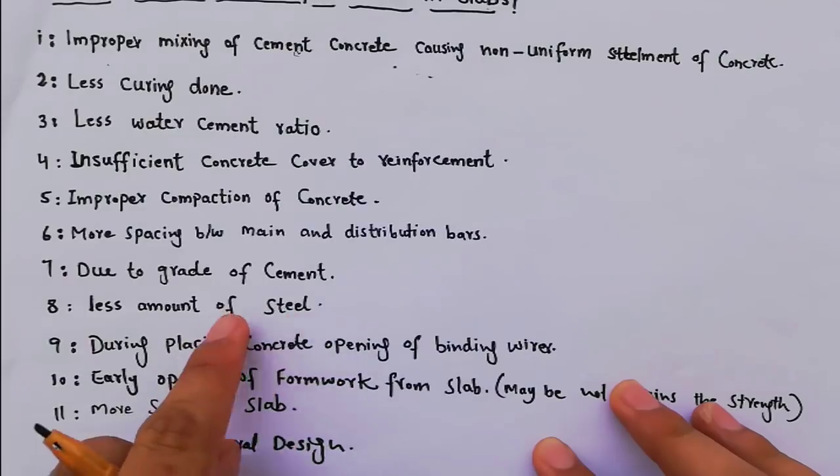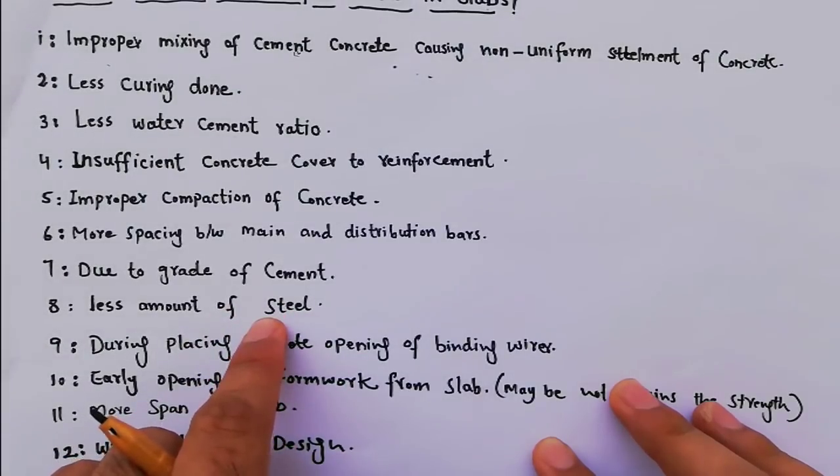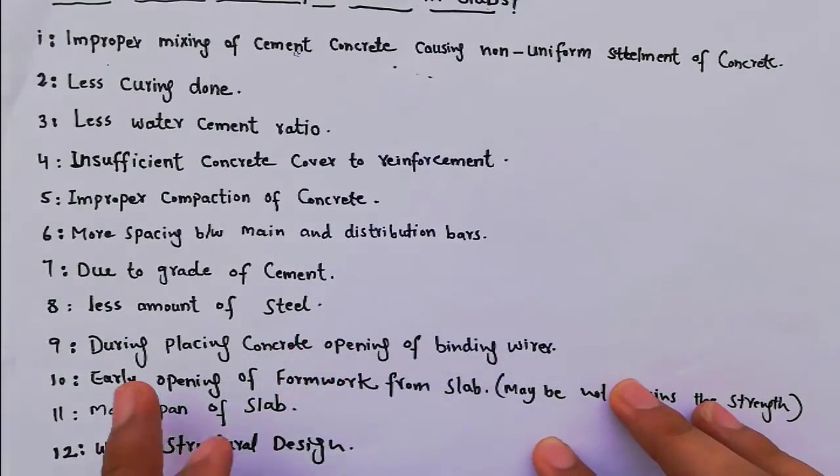Eighth one, less amount of steel. When we use less amount of steel without the design, this is also a cause of cracks in slabs.